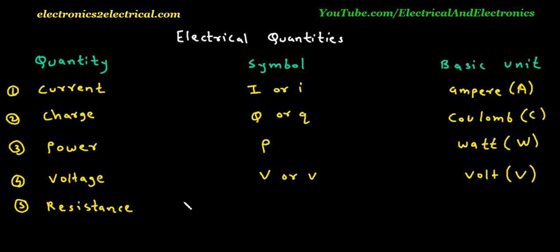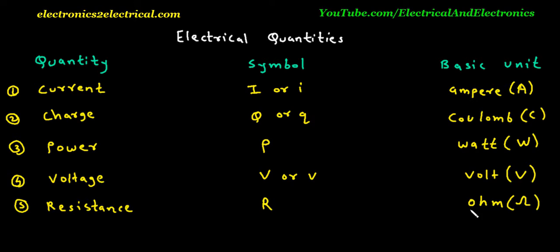Quantity: Resistance. Symbol: capital R. Basic Unit is Ohm, denoted by Omega.